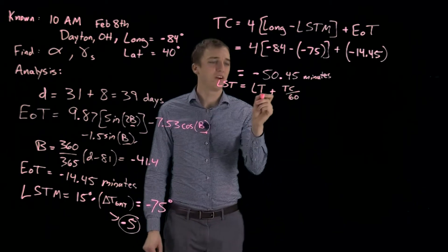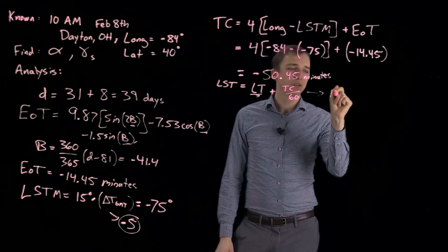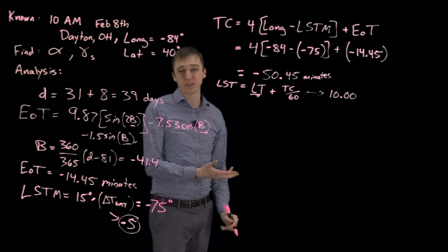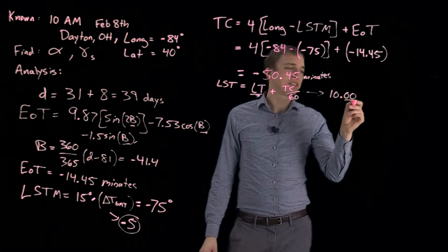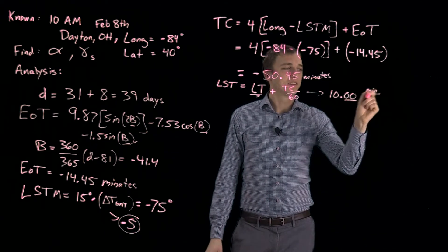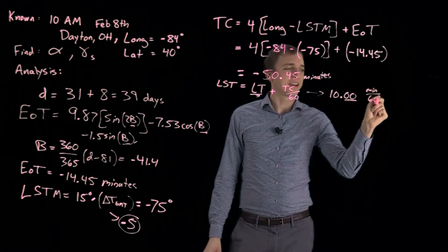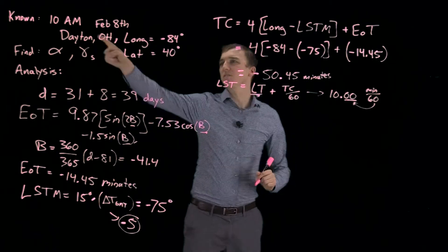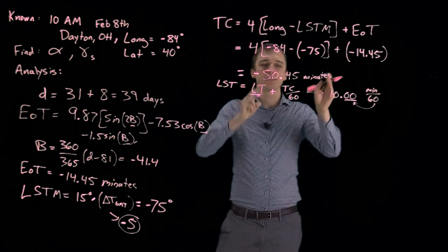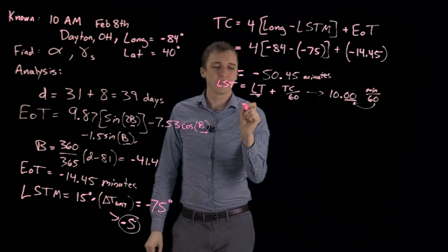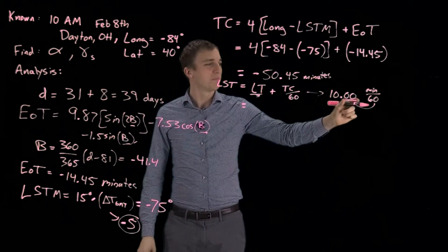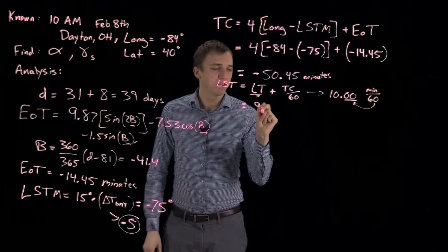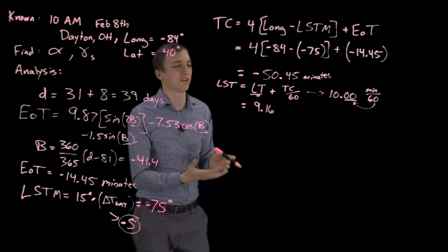Okay. So now our local time, which is 10 a.m., we need to express as a decimal. Luckily, since it's an hour, it is just 10.00. But if we had minutes, we would need to express those minutes as a decimal by taking the number of minutes and dividing it by 60. And that goes right in there. Okay. So plugging in our local time and our time correction factor, which we divide by 60, then we get... So we're working in hours with minutes as the decimals. Then we end up with 9.16.